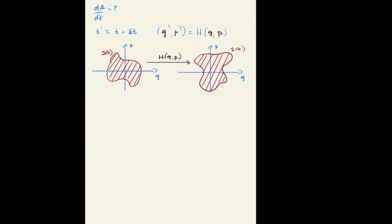Graphically, that means you have the point on the original surface. So this is the point QP. And by the action of the Hamiltonian, it got mapped elsewhere on the new surface.